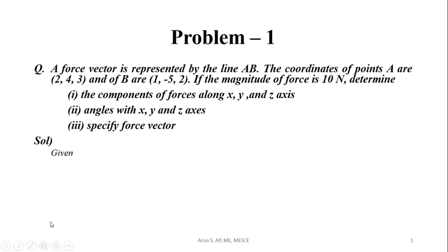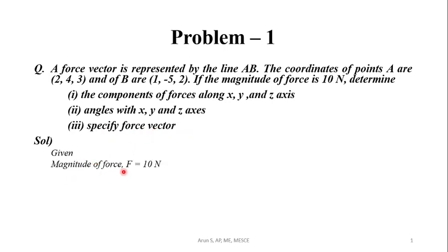A force vector is represented by line AB. The coordinates of point A are 2, 4, 3 and of B are 1, minus 5, 2. If the magnitude of force is 10 Newton, determine the components of forces along x, y and z axis, angles with x, y and z axis, and specify the force vector. The magnitude of force is 10 Newton.